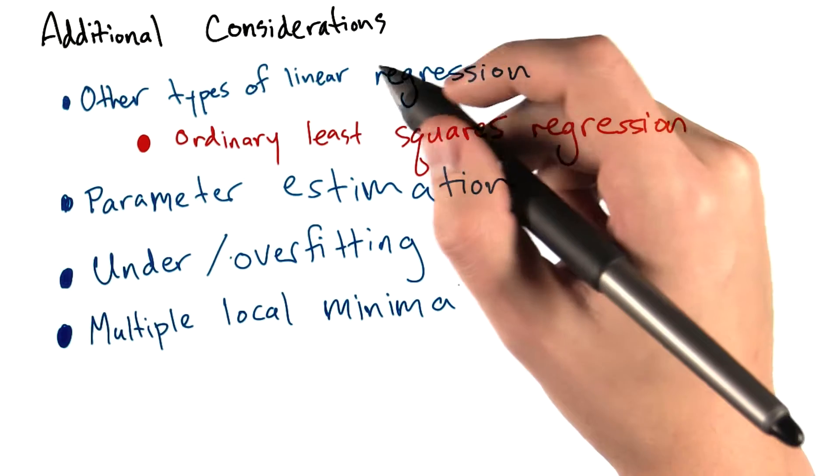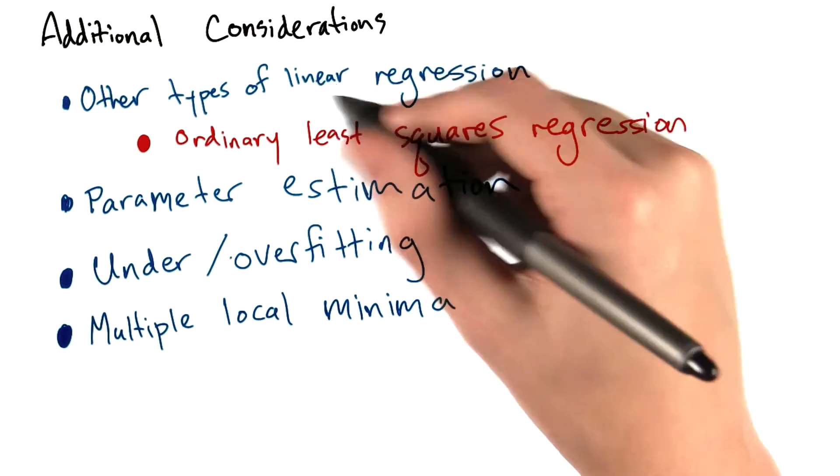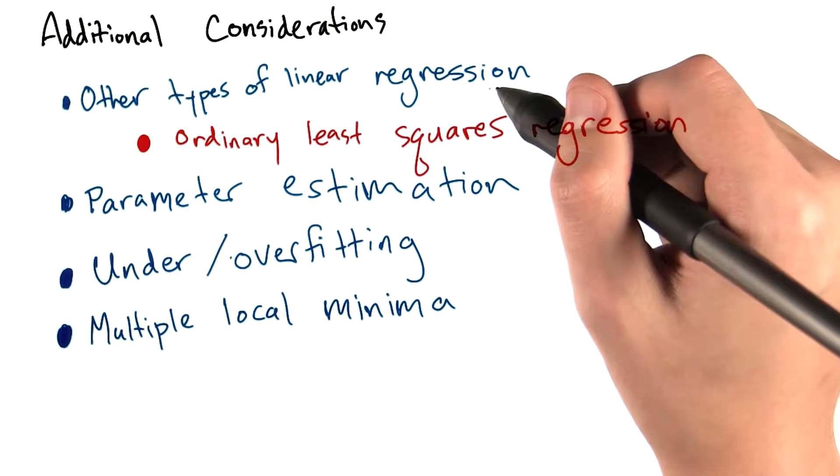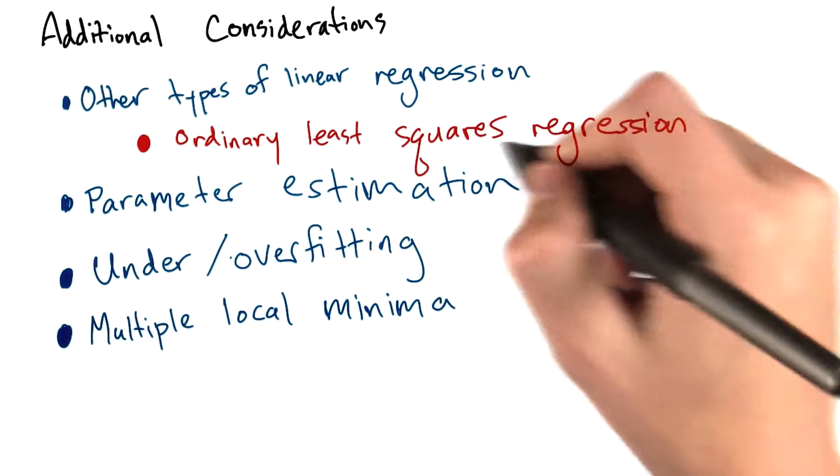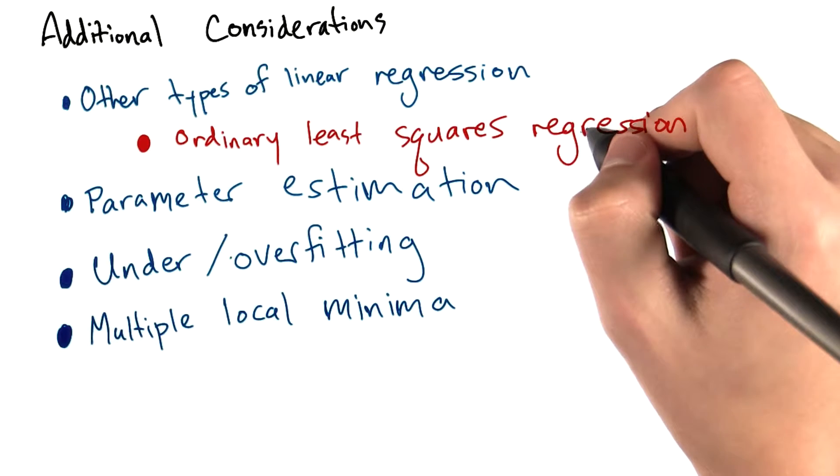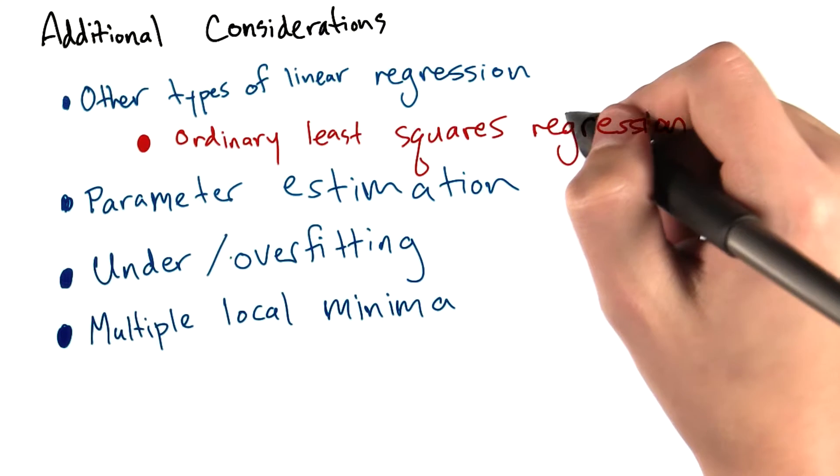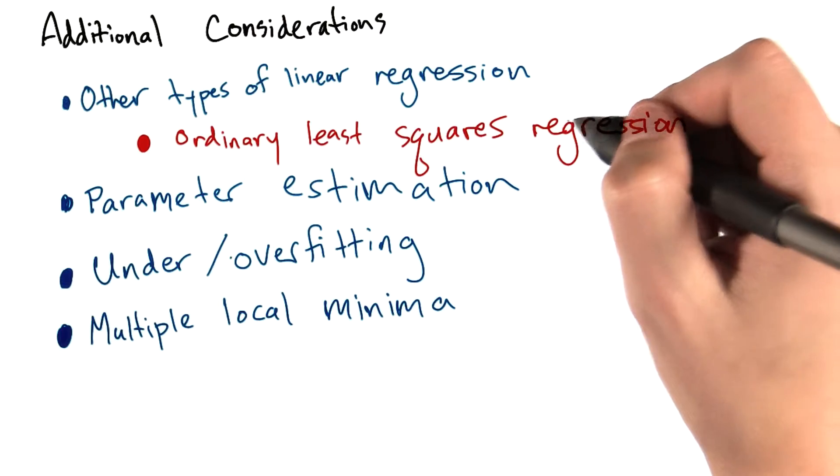First of all, gradient descent is only one implementation of linear regression. There are a bunch of other ones and in some sense, they may be better. Ordinary least squares, for example, is always guaranteed to find the optimal solution when performing linear regression, whereas gradient descent is not.